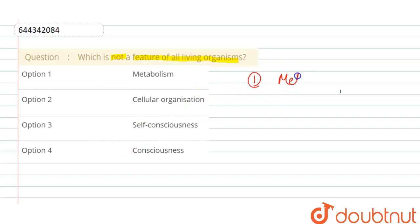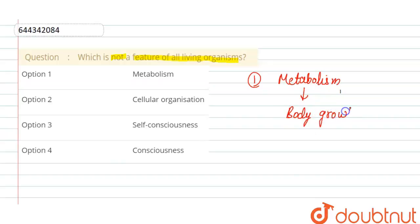The first option is metabolism. This option is incorrect here, as metabolism includes body growth and energy. It is a chemical process that occurs inside the body, and it is a feature possessed by all living organisms. So this option is incorrect.